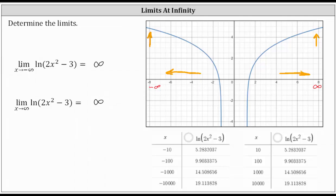For the first limit where x approaches negative infinity, I created a table using x values of negative 10, negative 100, negative 1,000, and negative 10,000. Looking at the outputs, we can see they do increase without bound and approach positive infinity. Similarly, for the second limit as x approaches positive infinity, I use the x values of 10, 100, 1,000, and 10,000. Once again, the corresponding outputs increase without bound — not very fast, but they do continue to increase without bound.